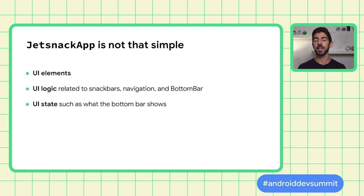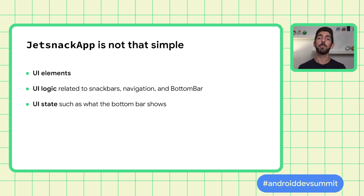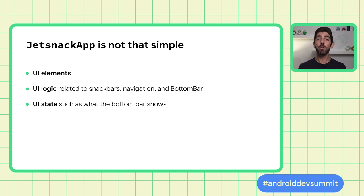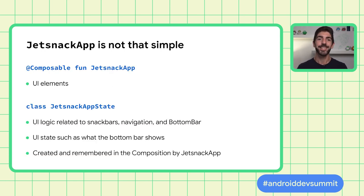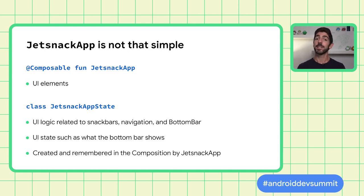In reality, things can get more complicated. JesnackApp, apart from emitting UI elements, is in charge of showing snack bars, navigating to the proper screens, and showing or hiding the bottom bar. Having all of that in the composable can make it difficult to read and understand. Following the separation of concerns principle, we can delegate the UI logic and UI element state to a different class — called a state holder — and leave the composable function to just emit UI elements. JesnackAppState will be the source of truth for JesnackApp's UI element state, so all state writes should happen inside the class.